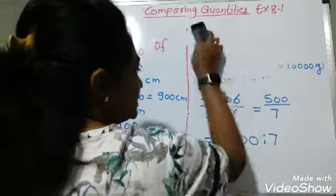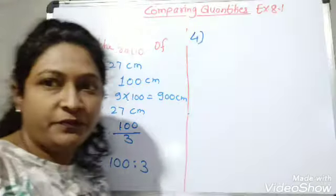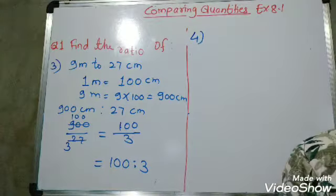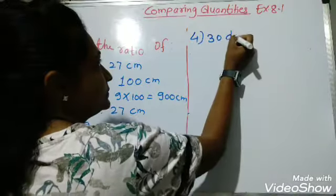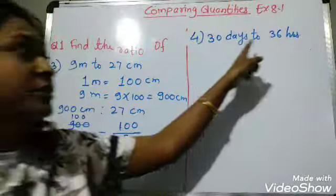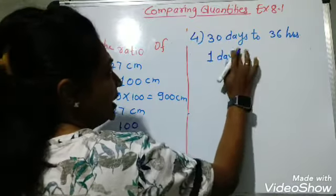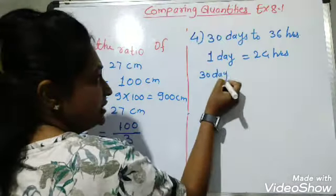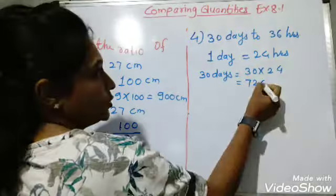Let's look at our fourth example: 30 days to 36 hours. We will convert days into hours. You should know that one day has 24 hours. So thirty days equals 30 multiplied by 24. Thirty times twenty-four: three times twenty-four is seventy-two, so thirty days equals 720 hours.